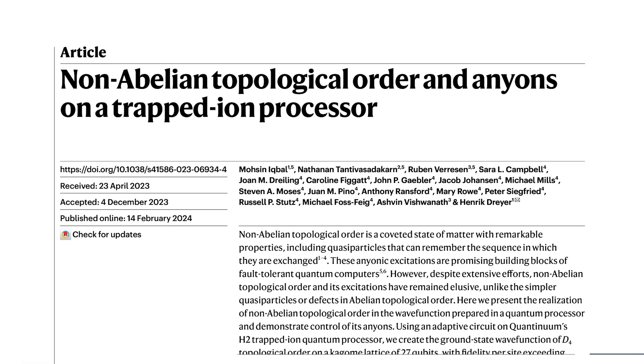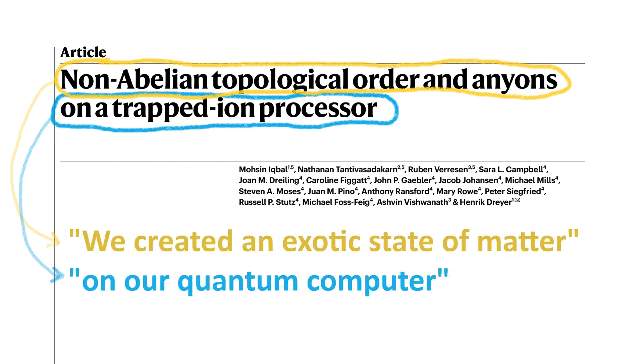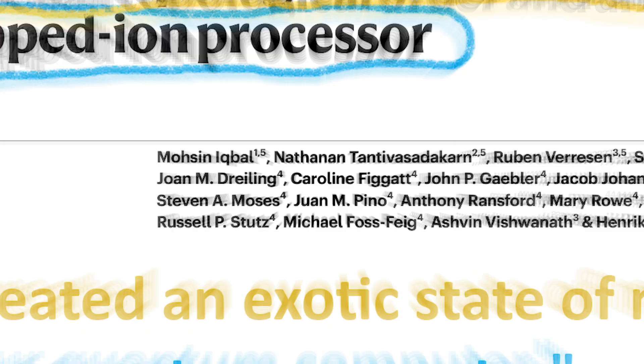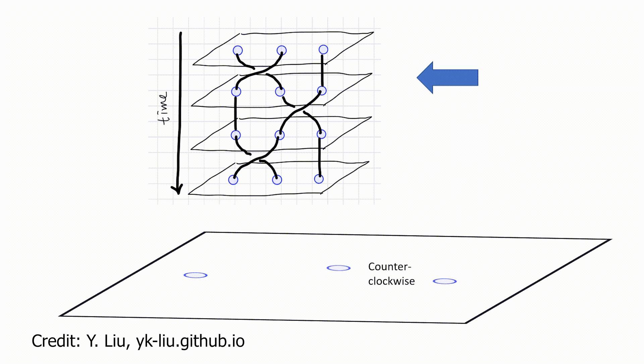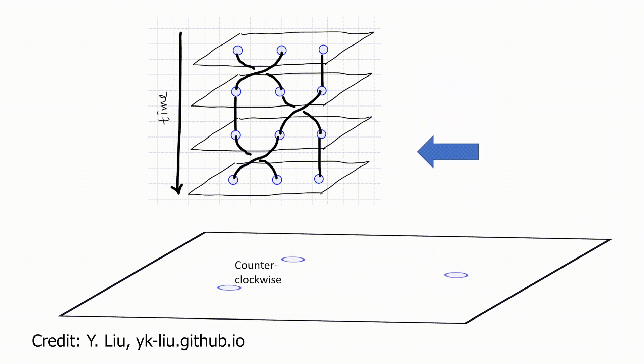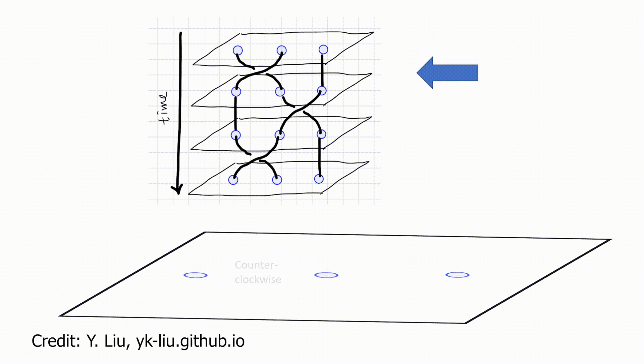Quantinuum and team say they've created nonabelian topological order and anyons on a trapped-ion processor — which basically translates to: we created this exotic state of matter on our quantum computer. What makes this state special is very interesting but very complicated, so we'll water it down. Nonabelian anyons are quasi-particles, or particle-like excitations, that can remember how they are moved around each other. This special memory property, which scientists call braiding, means that you can make error-resistant qubits out of them, making them highly coveted for topological quantum computing.